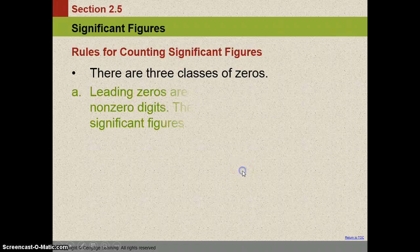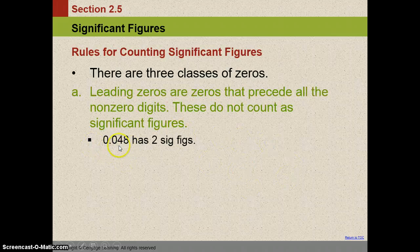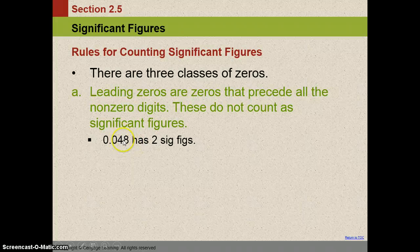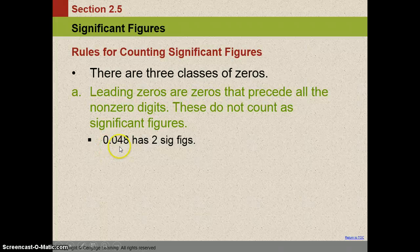There's three classes of zeros. We have leading zeros. Leading zeros that precede non-zero digits are never significant. They're just placeholders. So in this example, there's only two sig figs, the 4 and the 8.